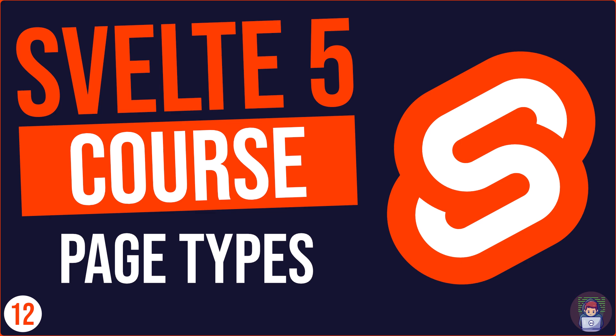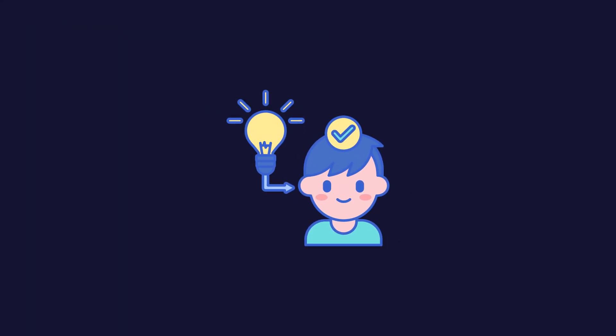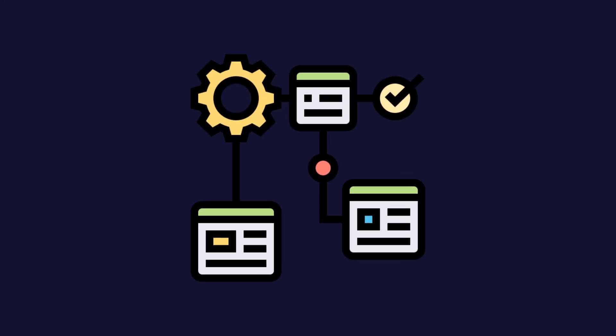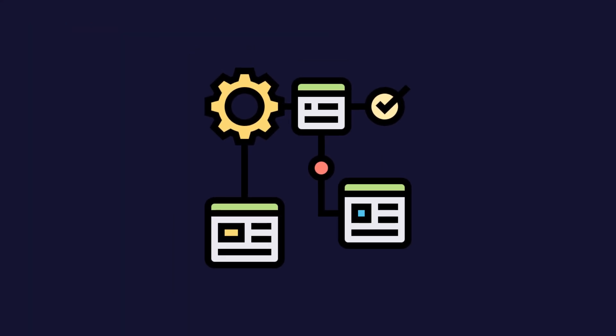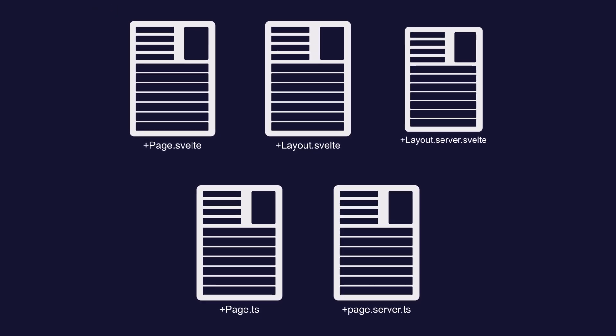In this twelfth part, we're going to learn about the most fundamental concepts in SvelteKit page types. Understanding page types is crucial for building efficient and well-structured SvelteKit applications. In SvelteKit, we have several different types of files that handle different aspects of our pages and layouts. Each file type serves a specific purpose, and understanding when and how to use each one will make you a more effective SvelteKit developer.